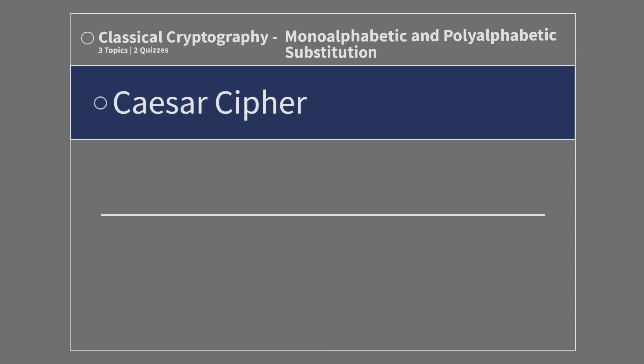Classical Cryptography: Mono-alphabetic and Poly-alphabetic Substitution. Caesar Cipher — Weaknesses.